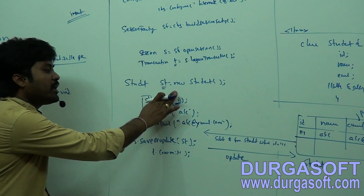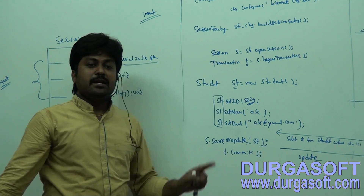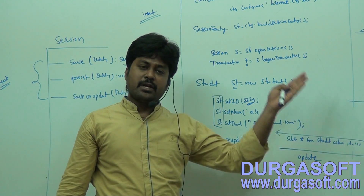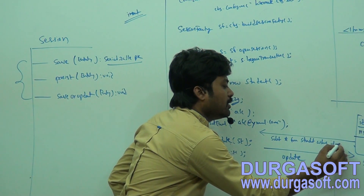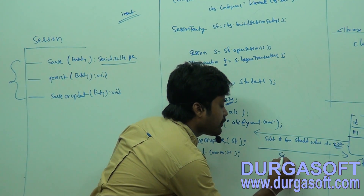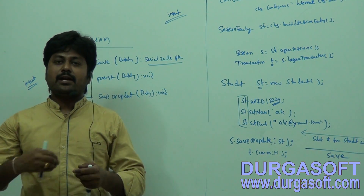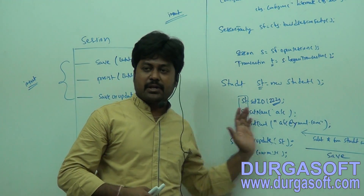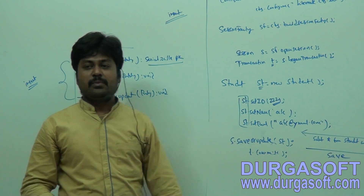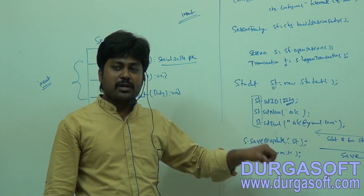In case you pass a different id — say student id 112 — and that record does not exist in the table, saveOrUpdate will first try a SELECT using id 112, find no record, and then perform a save (insert) operation. So: if record found with changes → update; if record not found → save.